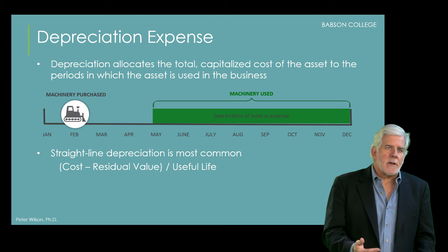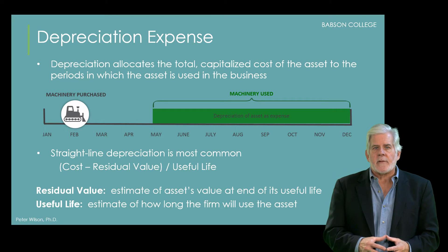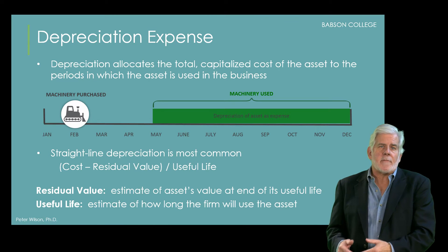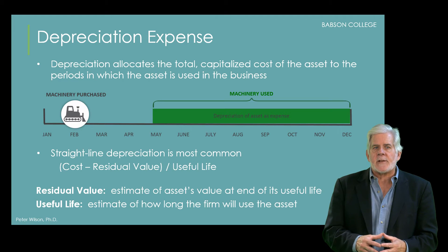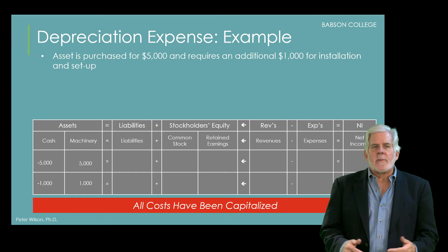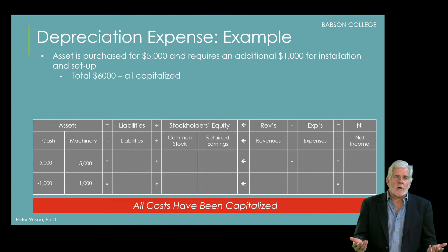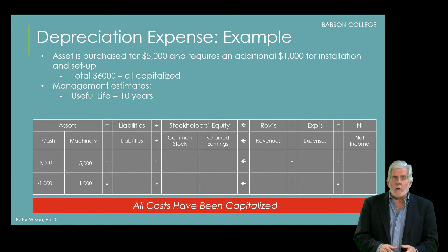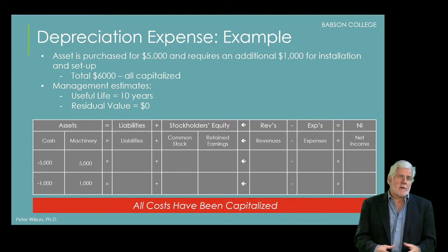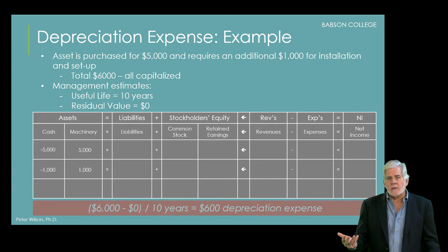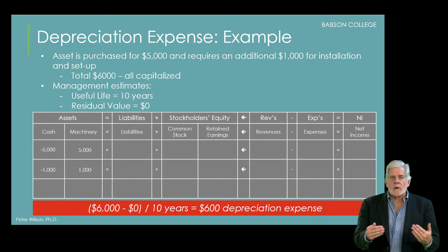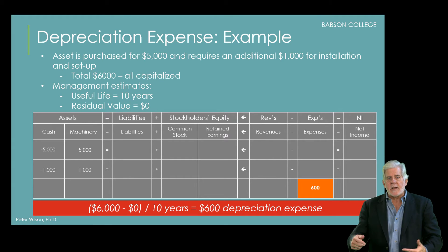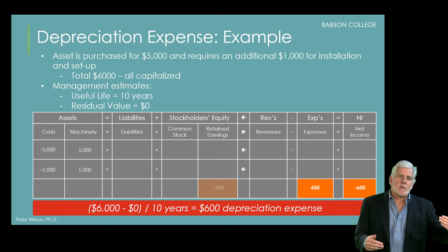Residual value is an estimate of what the asset will be worth at the end of its useful life. Both the residual value and useful life must be estimated by management based on how they intend to use the asset in their business. In our example, we will assume that $6,000 has been capitalized as the total cost of the machinery, the firm estimates a useful life of 10 years, at which time the machinery will only have scrap value estimated to be zero. Depreciation is then calculated as $6,000 divided by 10 years, or $600 per year. This is recorded as an expense on the income statement, reducing net income and retained earnings, and as a decrease to the machinery account, since the firm has used up one-tenth of the asset.